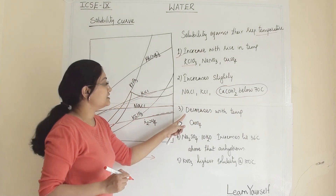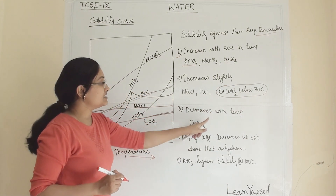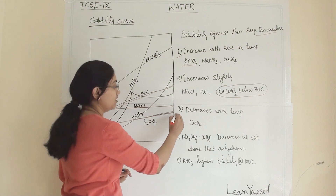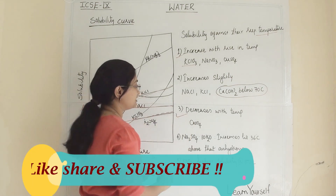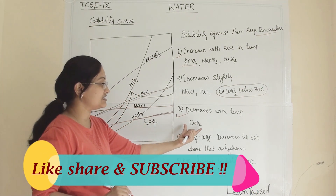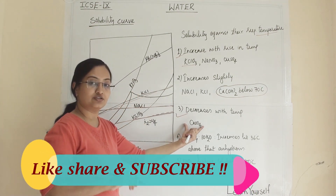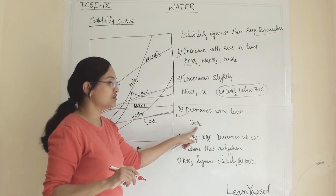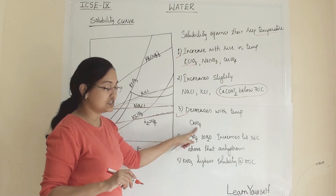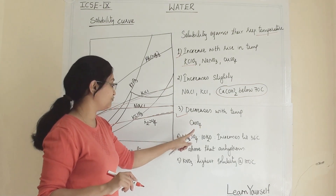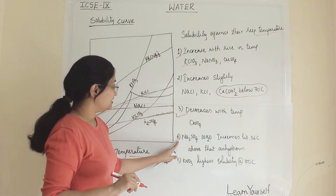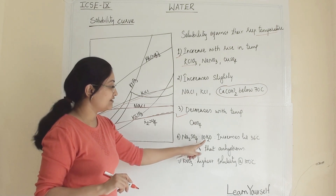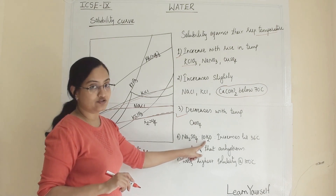The third category is salts that decrease in solubility with increasing temperature. This is an exceptional case: CaSO₄ shows decreasing solubility as temperature rises.